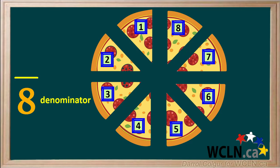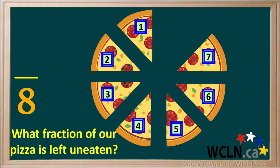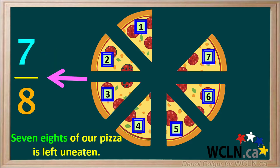Let's say someone eats one of the pieces of our pizza. Now we want to know what fraction of our pizza is left uneaten. We're talking about seven pieces. So the numerator of our fraction is seven. And we can say that seven eighths of our pizza is left uneaten.